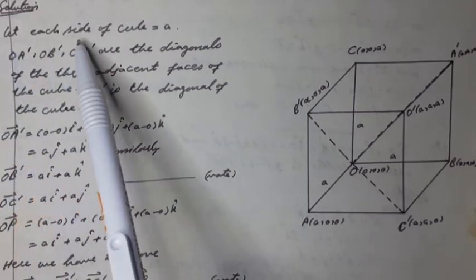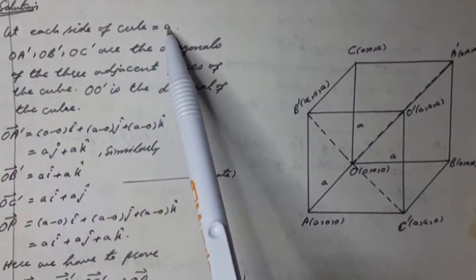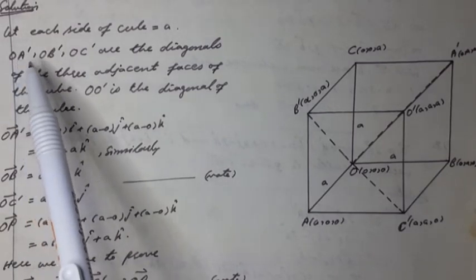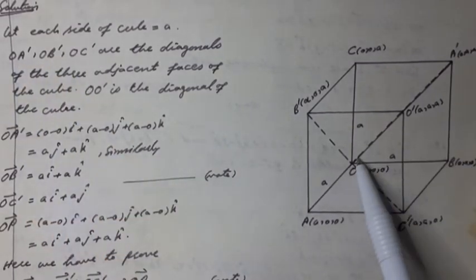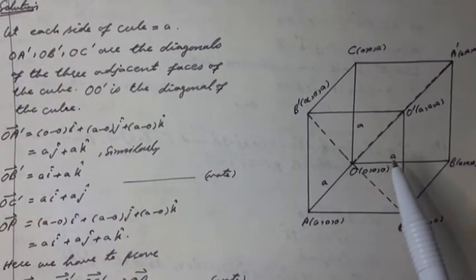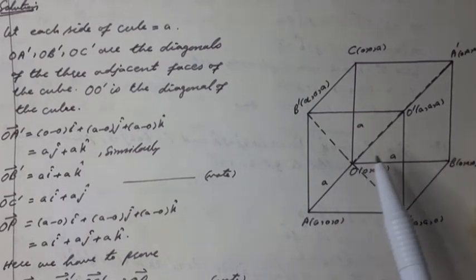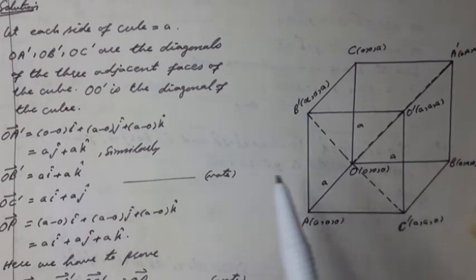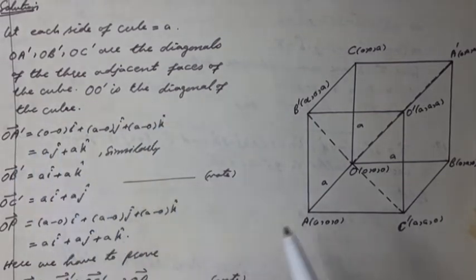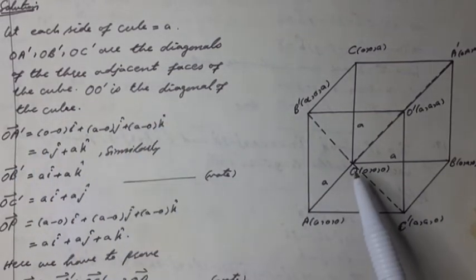Let each side of the cube have magnitude equal to A. OA', OB', OC' are the diagonals of the three adjacent faces of the cube. OO' is the diagonal of the cube, as shown in the figure.